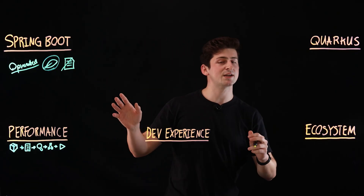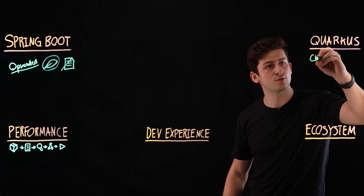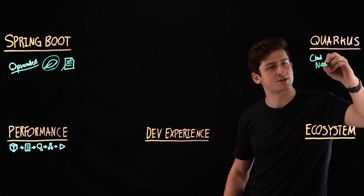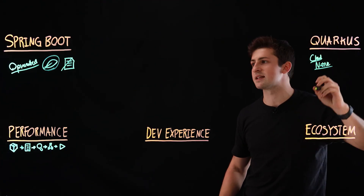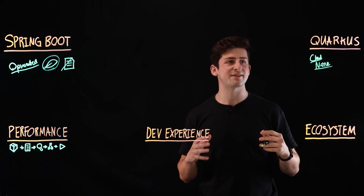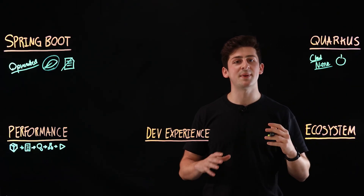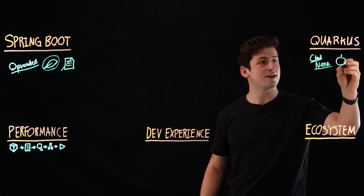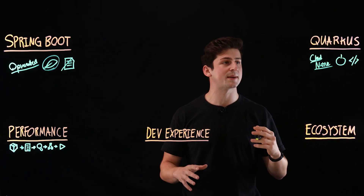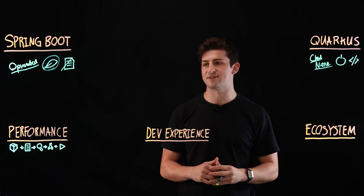Let's also talk about Quarkus, because Quarkus is a newer Java framework that takes a different approach. Quarkus is made for delivering container-optimized and cloud-native applications that have a faster boot time and better resource utilization. It also combines both the imperative and reactive programming models and has a lot of tools for developer productivity.